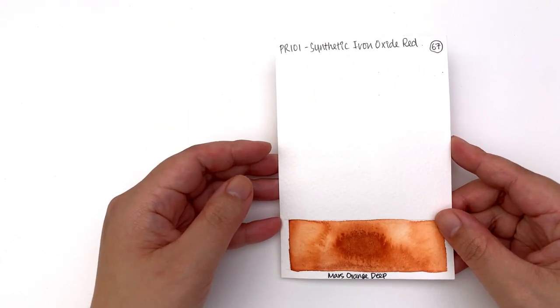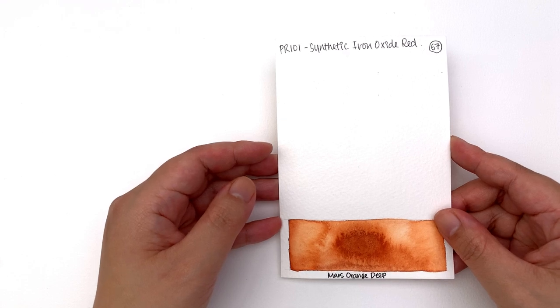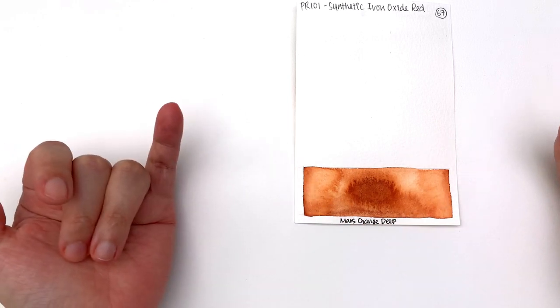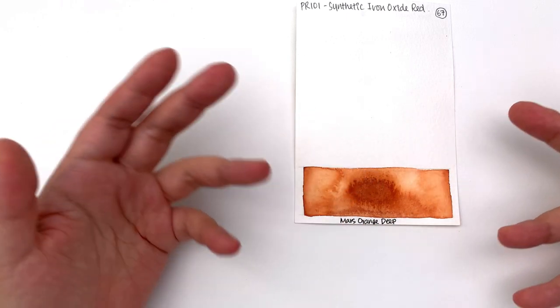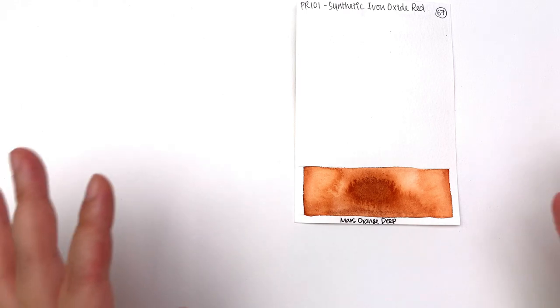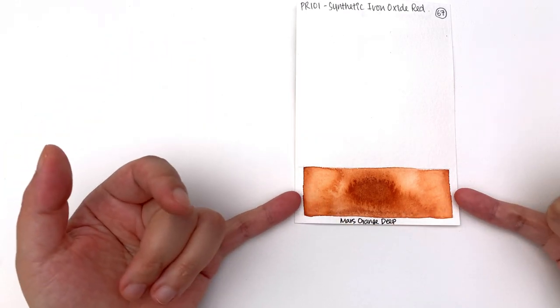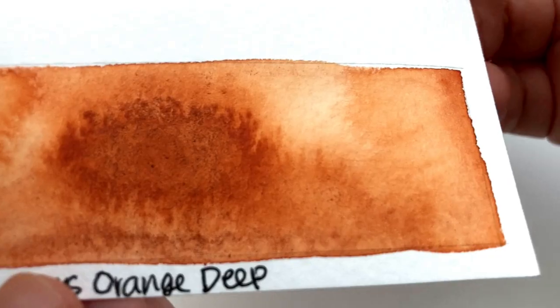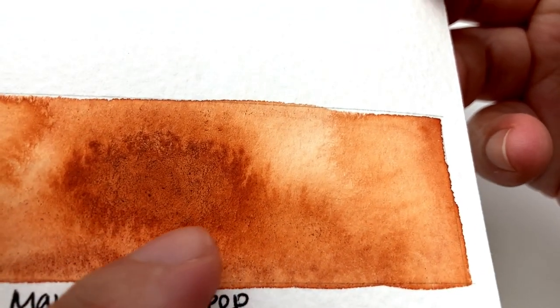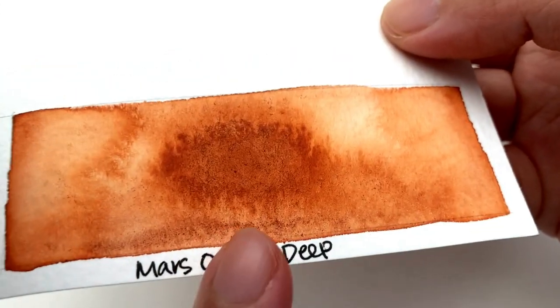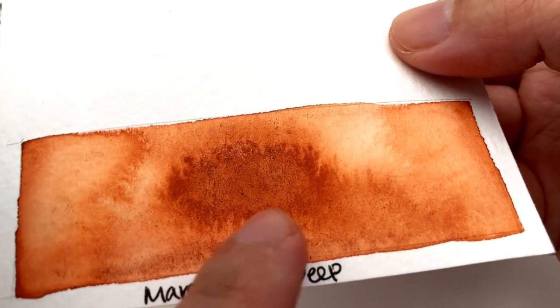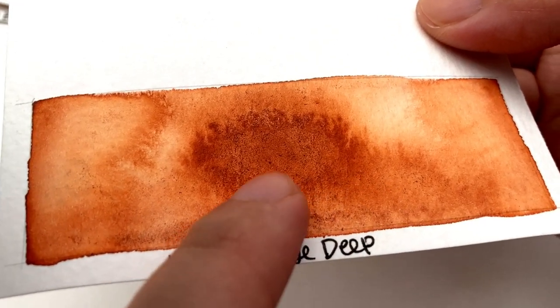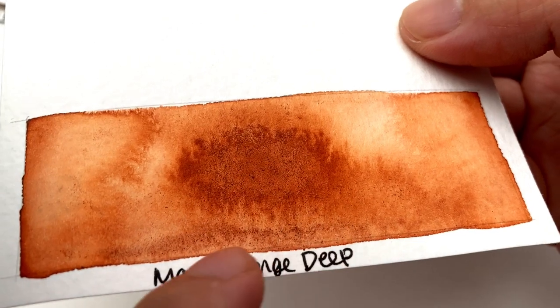It is made with PR101 which is synthetic iron oxide red again, and again huge amounts of dispersion. I'm sure this would probably go across an entire imperial sheet if you let this color go. It's got some awesome textures. So you get these particles happening in the middle. You also see a lot of granulation happening here. Lots of particles showing up.